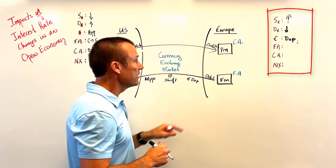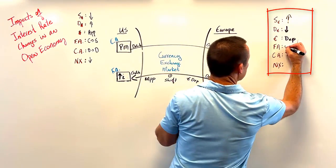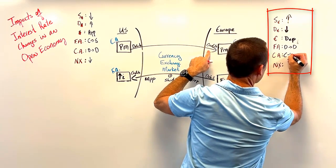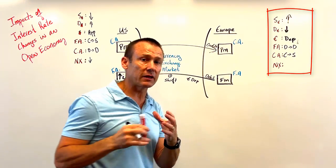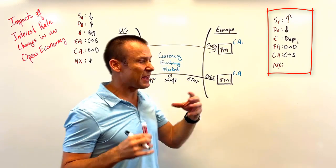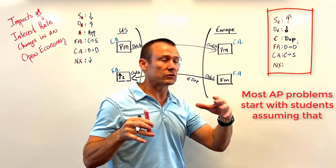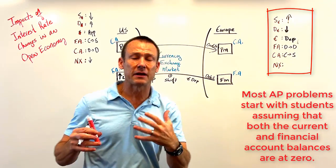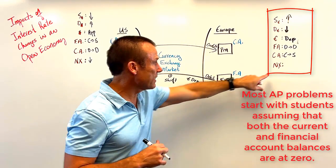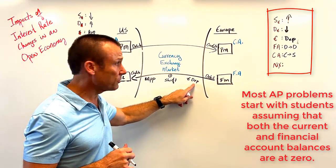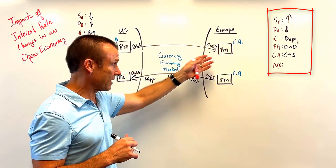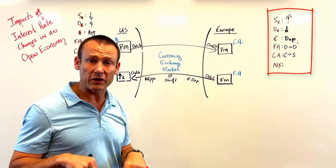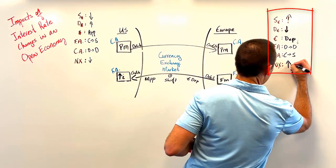As for Europe's two accounts: in the financial account we're getting debits, and debits lead to deficits. In the current account we've got the credits, and credits lead to surpluses. The AP test often says: starting with an original balance of zero in both accounts, where do you move? So that's why I put in deficit and surplus — those are the AP answers. For net exports: the euro depreciated, so European goods are cheaper to Americans. The dollar appreciated, which also means European stuff is cheaper — Europe is going to sell more exports to the United States, so net exports increase for Europe.